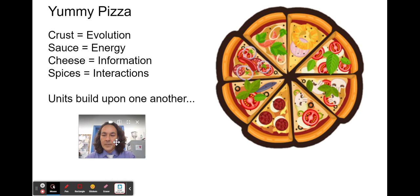You can think about it like a yummy pizza. The crust would be evolution, the sauce could be energy, cheese would be information, and the spices would be interactions. The units all build upon one another, and every single unit contains all of these big ideas. They're all sequenced in there.